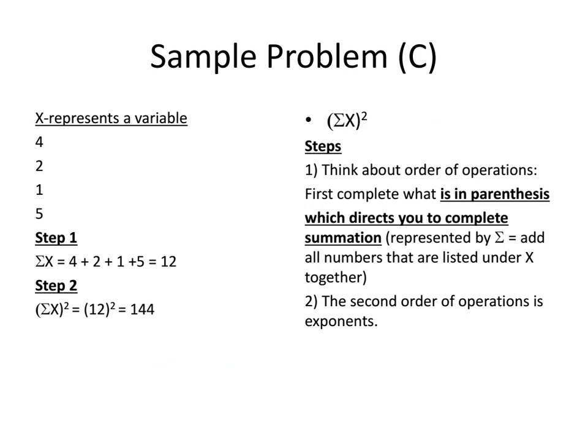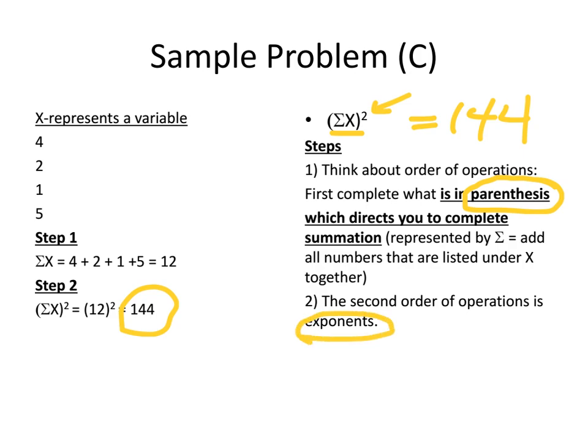For the next problem, we have the sum of X but notice it's in parentheses, and parentheses is our first order of operation. So the first thing we do is what's in the parentheses — the summation of X — and then we square it. We take 4 plus 2 plus 1 plus 5, which equals 12, and then we square that 12 to get 144. Our final answer is 144. We did the parentheses first, then the exponent.